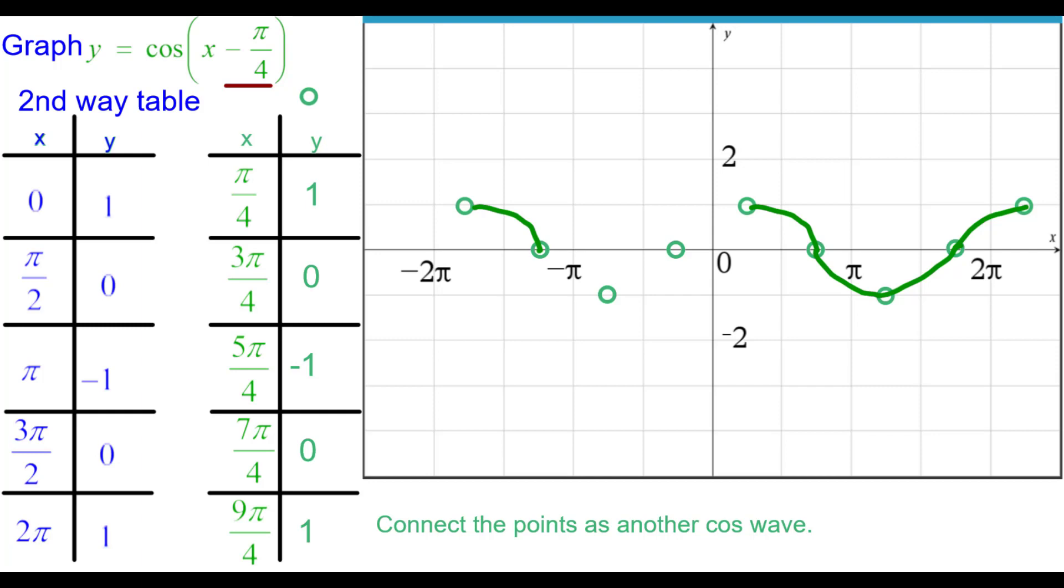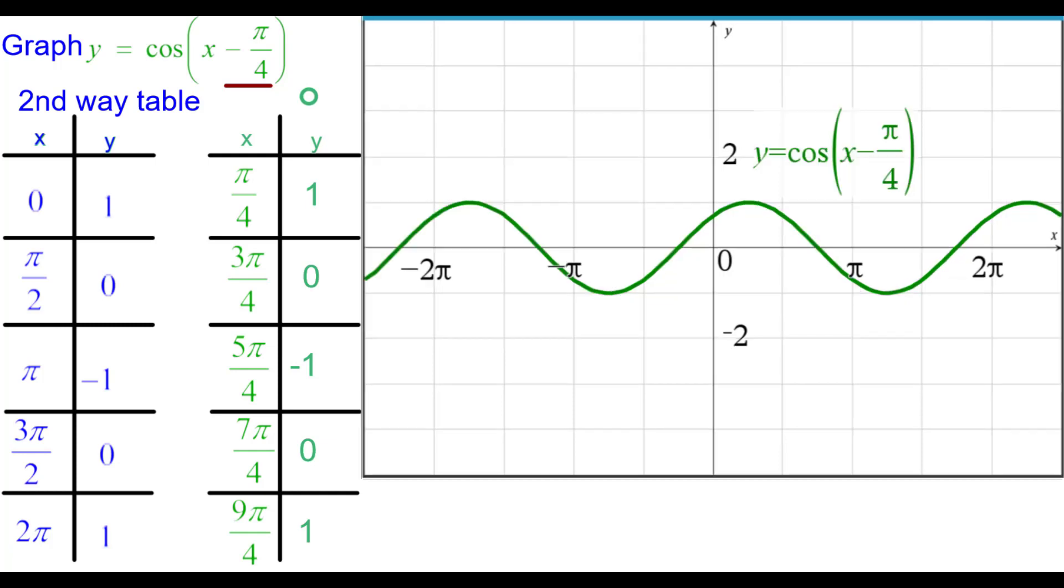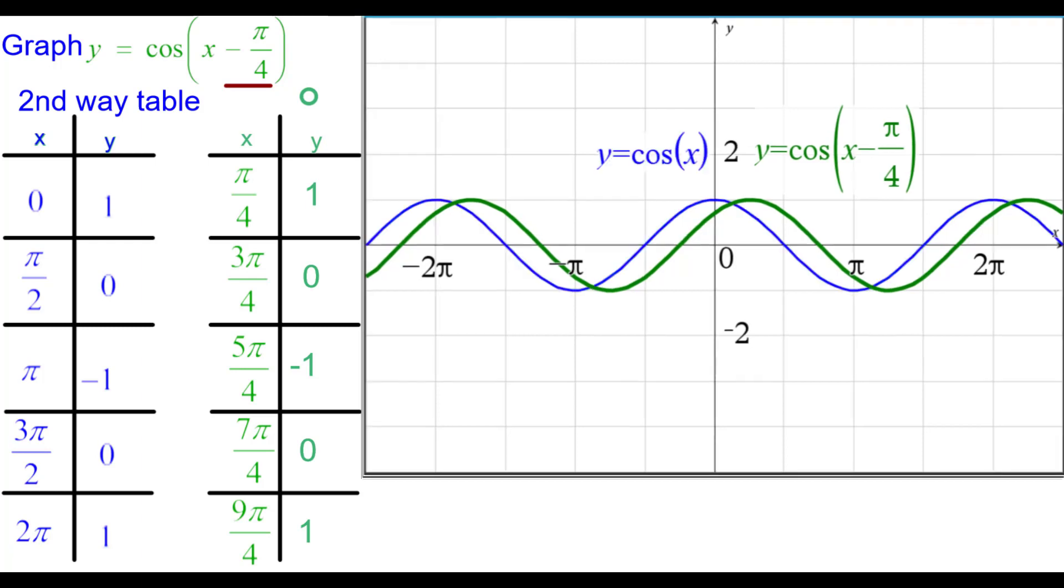Connect the points again as a cosine wave. Concave down, concave up, concave down. And so this is what the graph looks like, continuing to wave. And we compare that to the blue parent function.